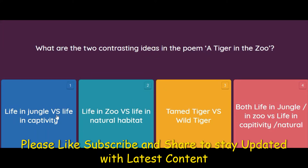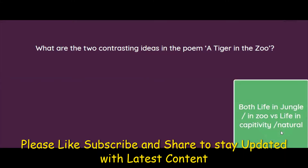The options are: life in jungle versus life in captivity, life in zoo versus life in a natural habitat, tamed tiger versus a wild tiger, or both life in jungle and zoo versus life in captivity. Basically, the poem compares life in the zoo or captivity versus life in the jungle, so the answer is life in jungle and zoo versus life in captivity or natural surroundings.